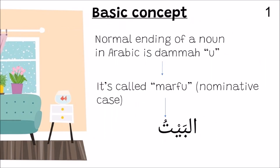We are going to learn three basic concepts. Concept number one: the normal ending of a noun in Arabic is Dhammah. It is called Marfuah, or nominative case. For example: al-Baytu.